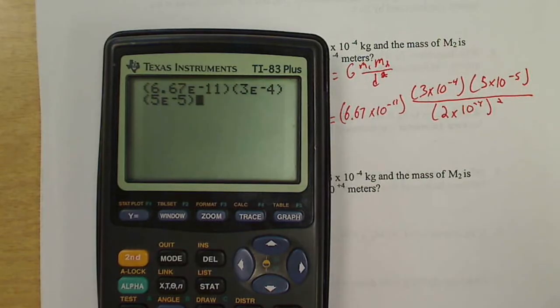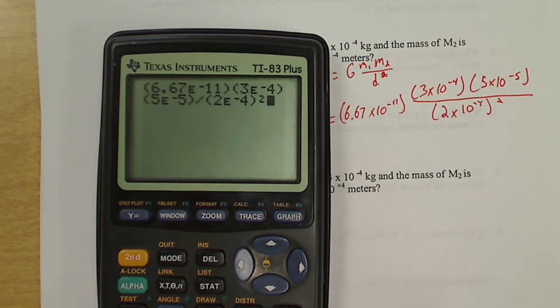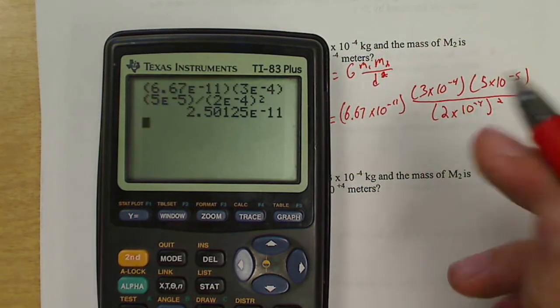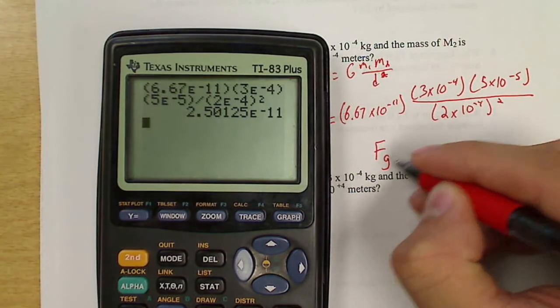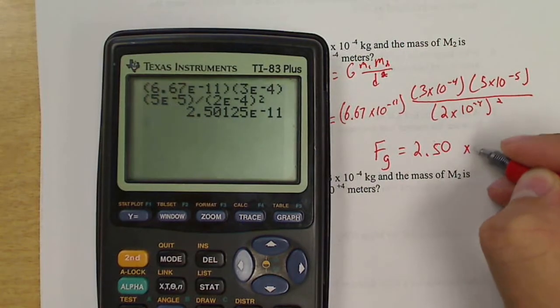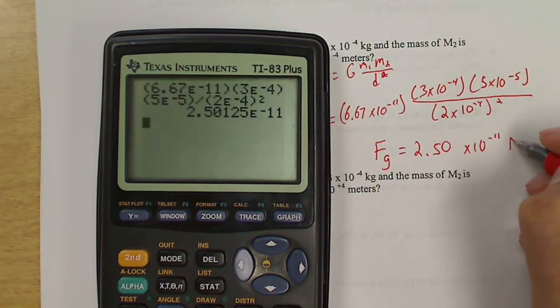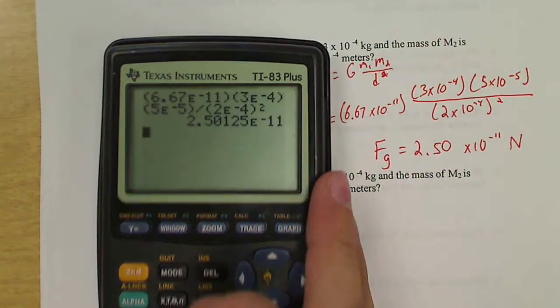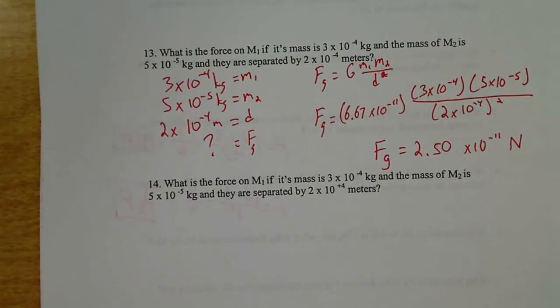Divided by 2 E negative 4 squared. The force of gravity equals 2.50 times 10 to the negative 11th. Because it's a force, it's measured in newtons.